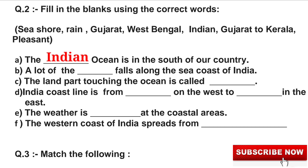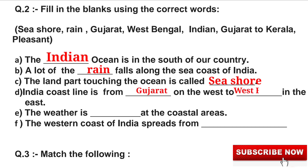A lot of rain falls along the sea coast of India. C: The land part touching the ocean is called blank. The answer is Seashore. The land part touching the ocean is called Seashore. D: India's coastline is from blank on the west to blank in the east. The answer is Gujarat and West Bengal. India's coastline is from Gujarat on the west to West Bengal in the east.